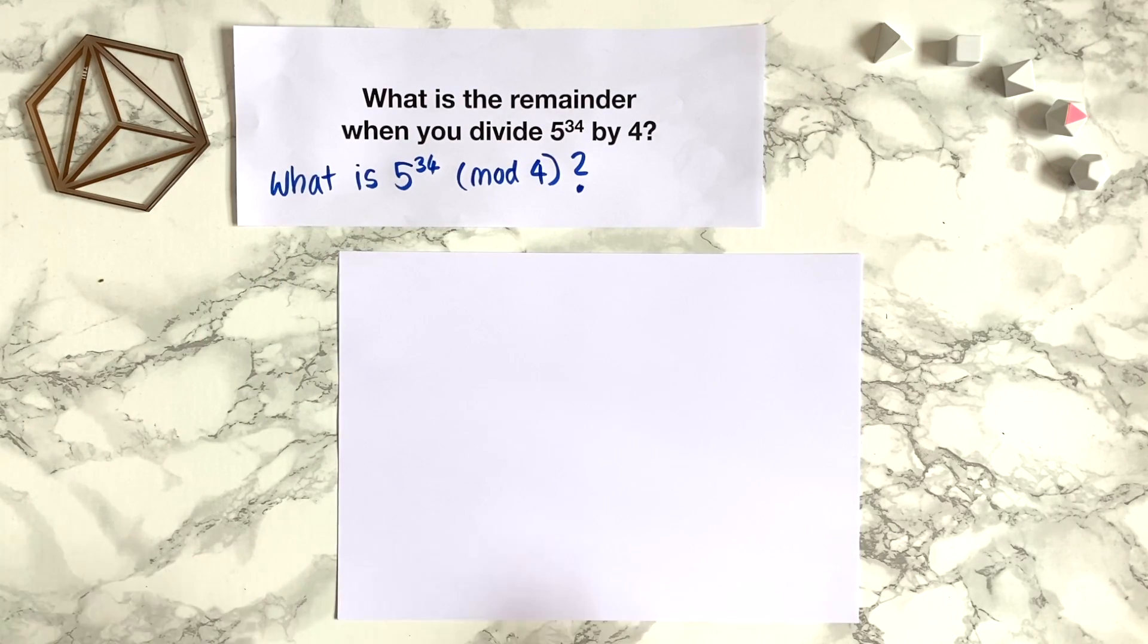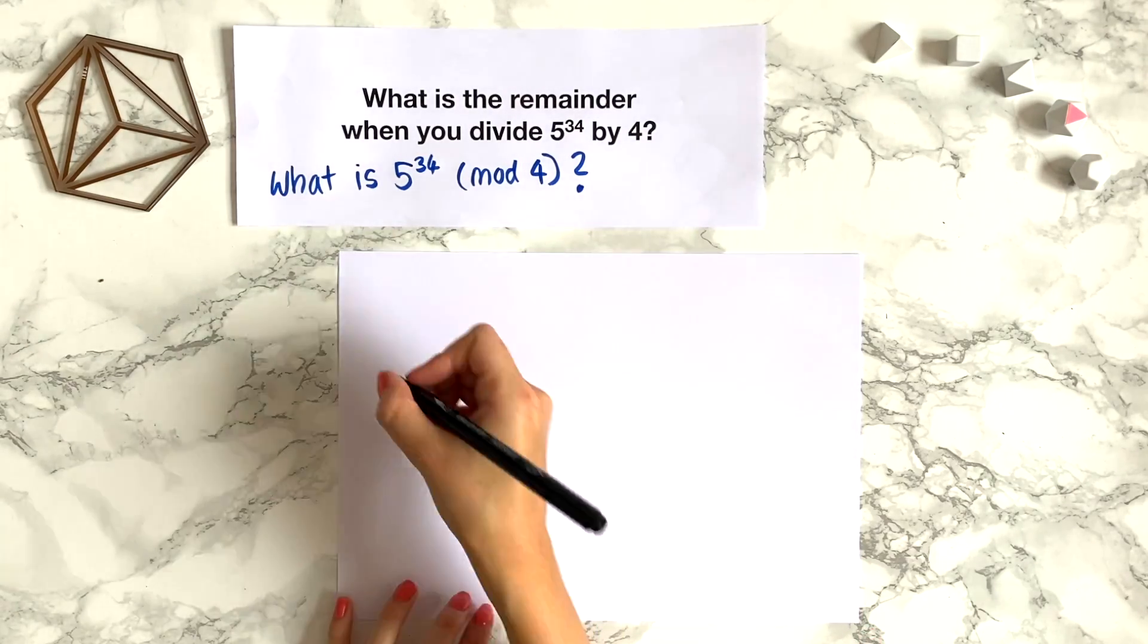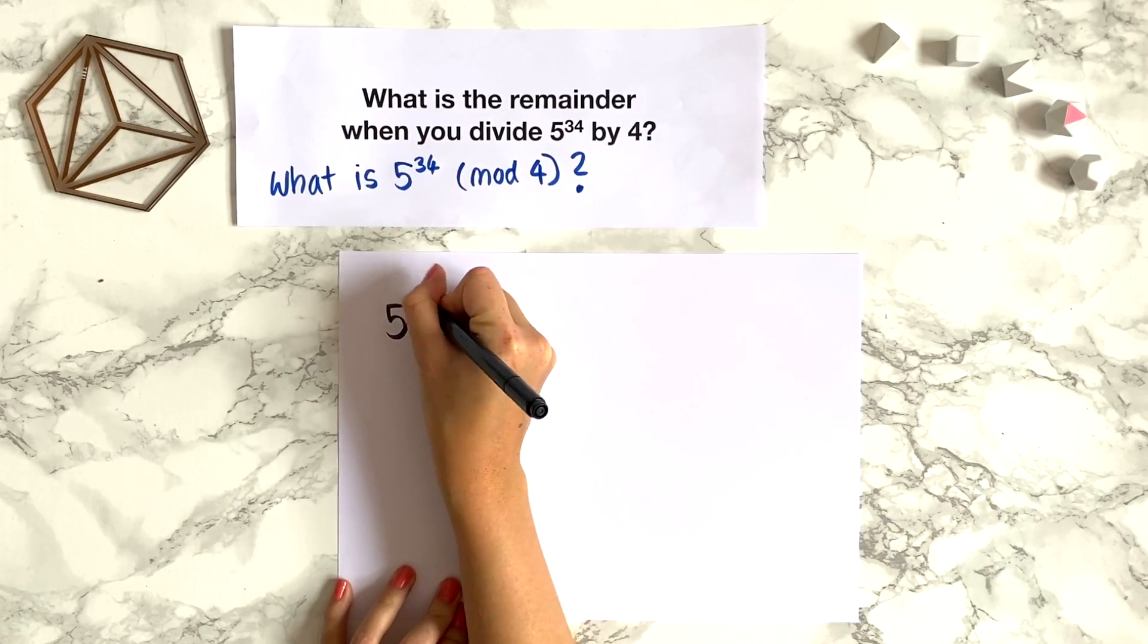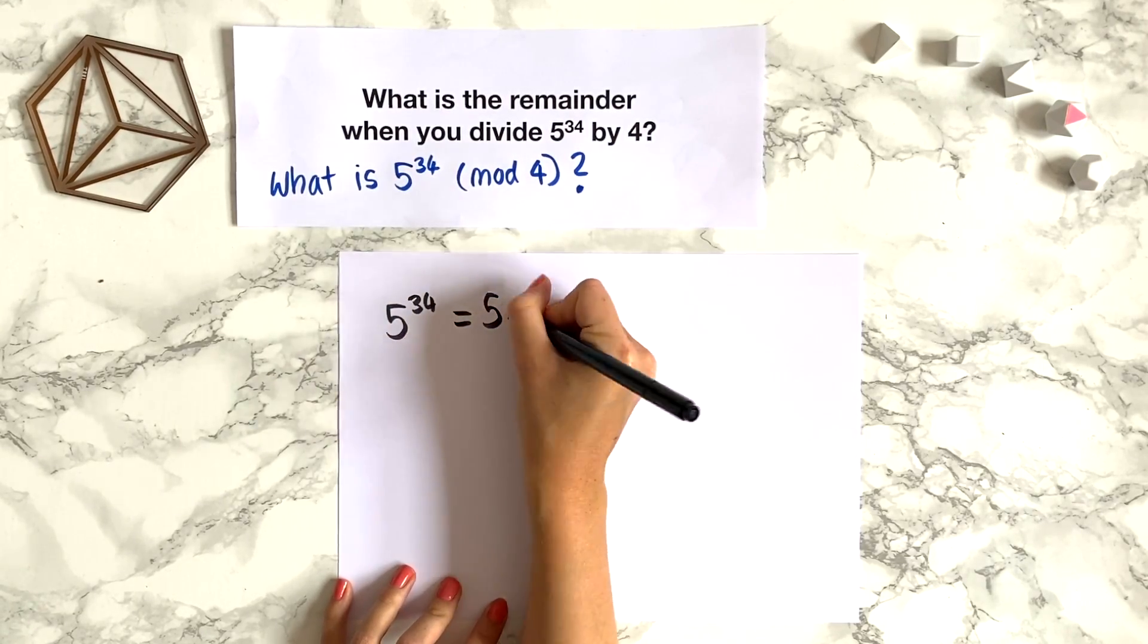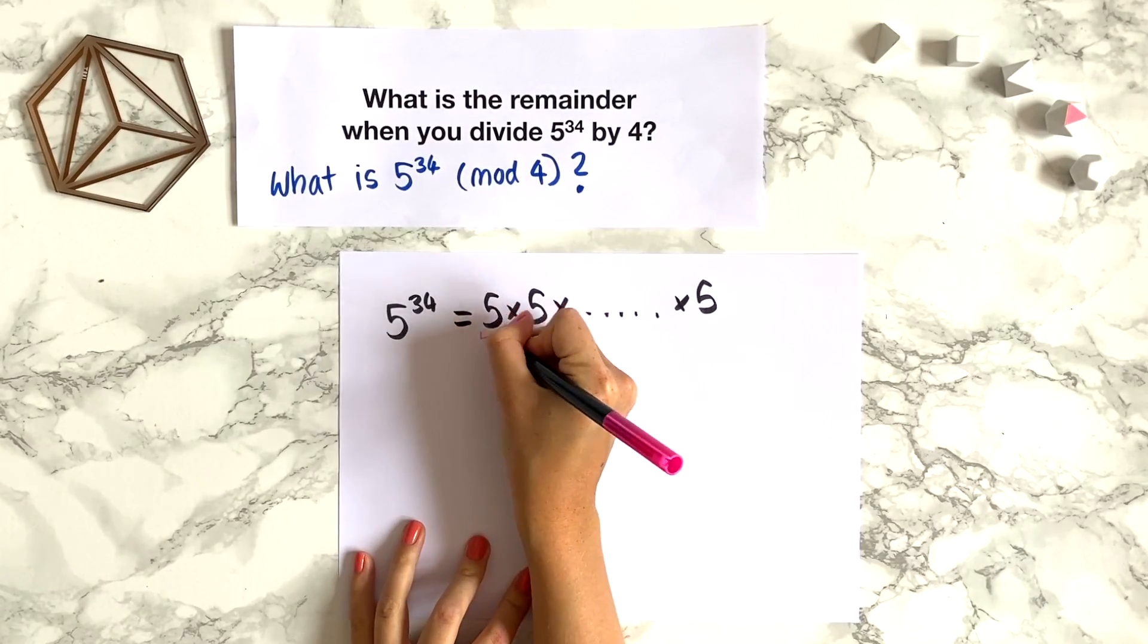So it's perhaps now clearer why this question is actually a modular arithmetic question. How do we go about finding the value of this modulo 4? Well, the first thing to notice is that 5 to the power of 34 actually just means 5 times 5 times 5 and so on, 34 times.